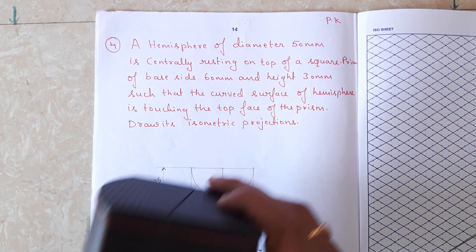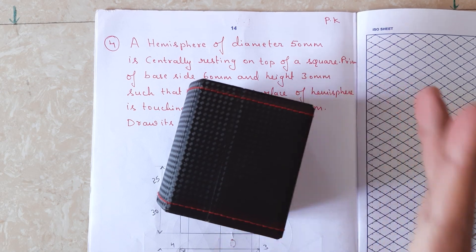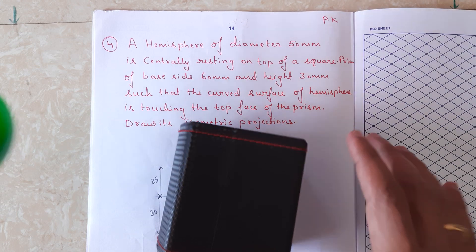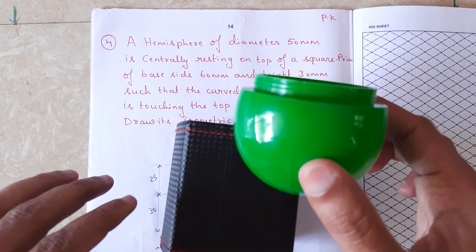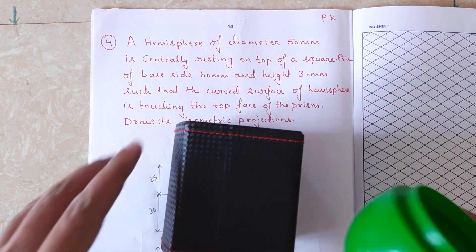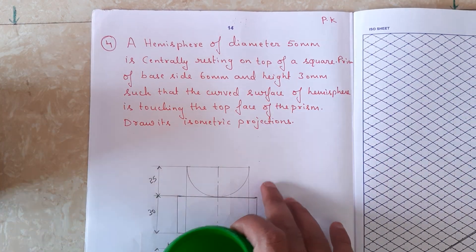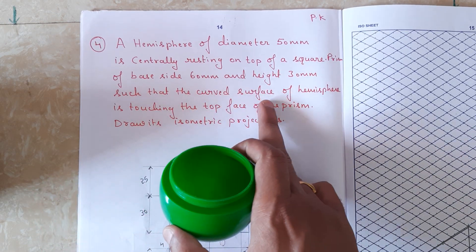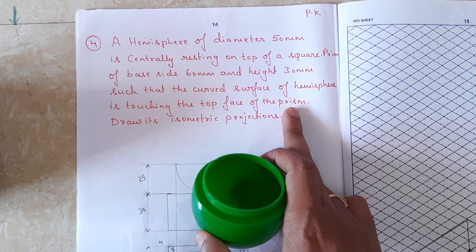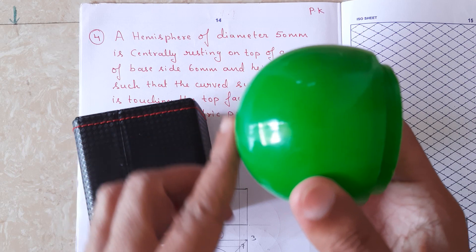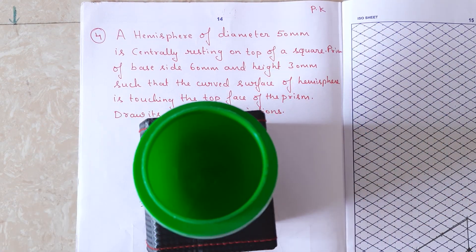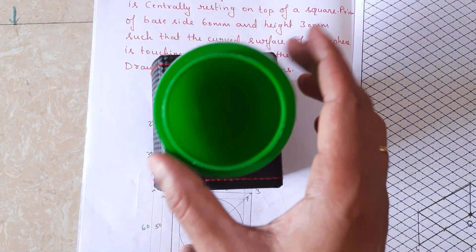We have a square prism with base 60 mm and height 30 mm. On the square prism the hemisphere is placed. It is given that the curved surface of the hemisphere is touching the top face of the prism — so the curved surface is on top of the square prism like this.